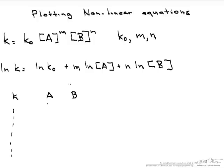Let's say we're given k's, our corresponding A's and B's. If you look at our equation though, what we really need is ln of k, ln of A, and ln of B. And that's something that we can easily calculate in a spreadsheet.